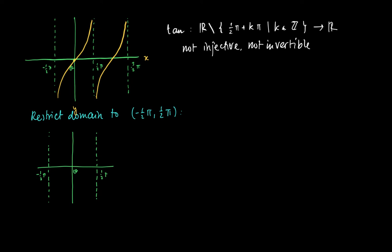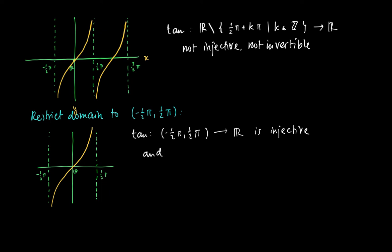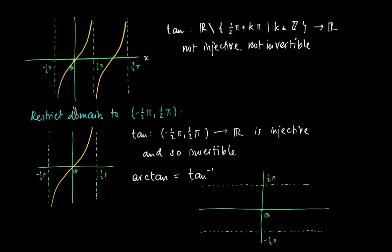But again we can restrict our domain to the open interval (-π/2, π/2), and there we see a strictly monotonically increasing function. So restricting the tangent to this interval gives an injection, and this mapping is also invertible. The inverse of the tangent on the interval (-π/2, π/2) is called the arc tangent. Its graph is obtained by reflecting the graph of the tangent in the line x equals y.